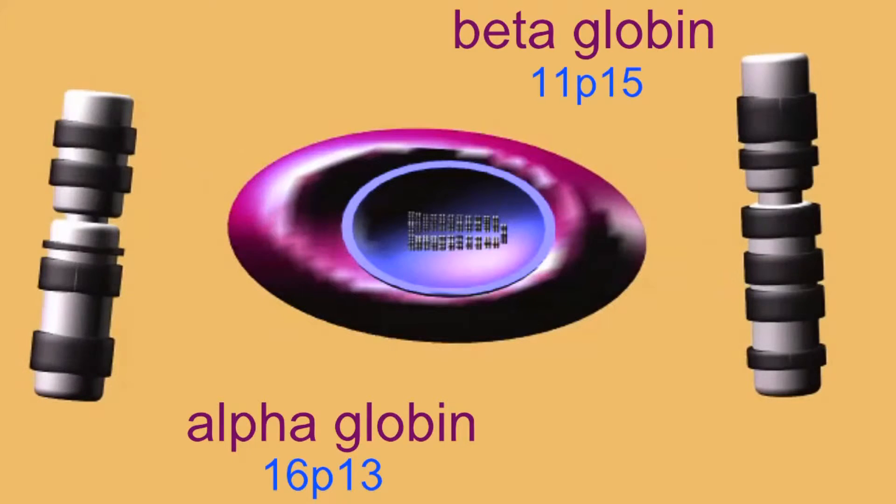The other two globin chains in adult hemoglobin are beta globin chains, whose gene is located in a cluster on chromosome 11p15.